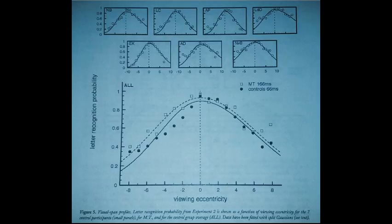The small panels show data for the seven control groups for MT and for the control group average as well.